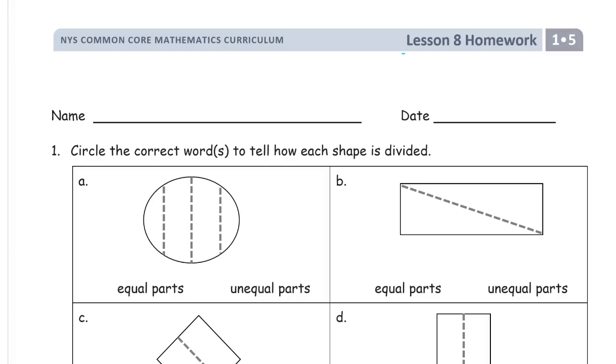Welcome to the homework for lesson 8. This is module 5 of first grade. Name first, please. And this says circle the correct word to tell how each shape is divided, whether the parts are equal or unequal.